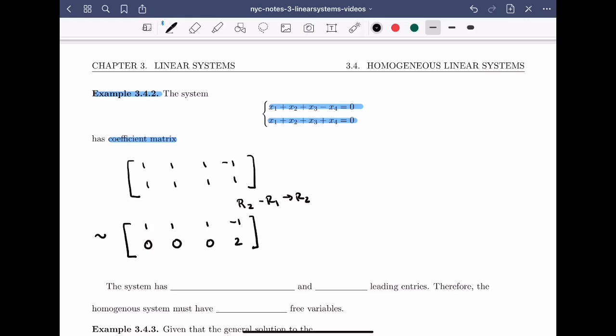So to get to reduced row echelon form, I should also scale row 2 by 1 half, giving me the matrix [1, 1, 1, -1; 0, 0, 0, 1].